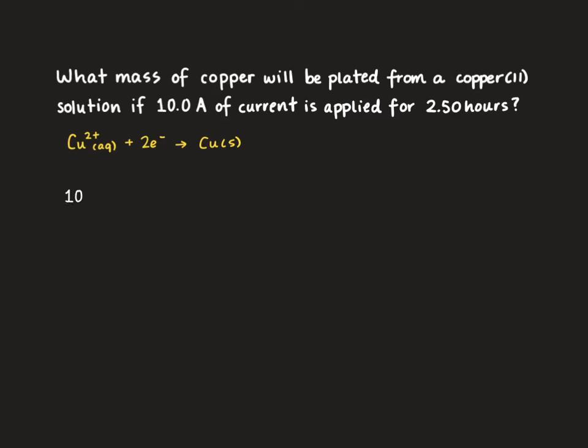So an amp is really a coulomb per second. So 10 amps can be written as 10 coulombs per second. 2.5 hours is really 9,000 seconds because there's 3600 seconds in one hour. So at this point our seconds will cancel and we are left with coulombs. So we've calculated the amount of charge that's been added to our system.